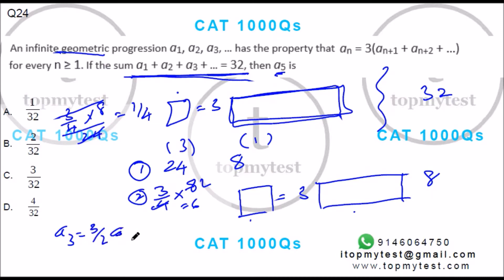a4 will be 1/4 of this, which is 3/8. a5 will be 1/4 of this, which is 3/32. Option C is your correct choice. That finishes this set.